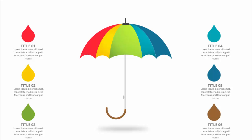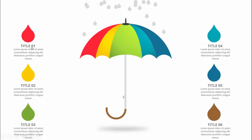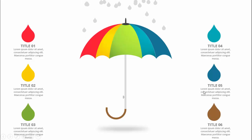In today's tutorial I'm going to show you how to create a six-options umbrella design slide in PowerPoint. When you click, some raindrops fall onto the umbrella. You can add options with these colors for the title, add detail text, and give the raindrops or teardrops different colors according to your requirement.